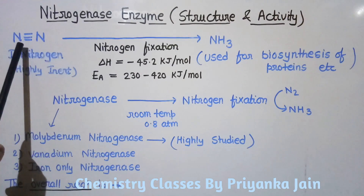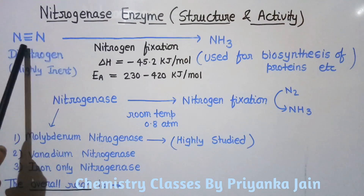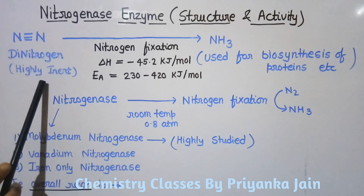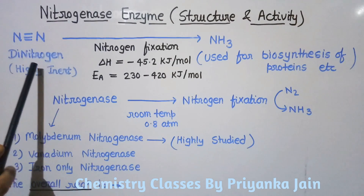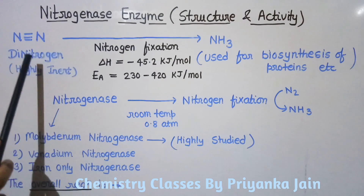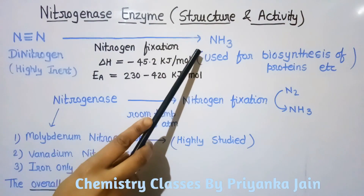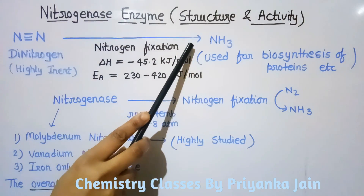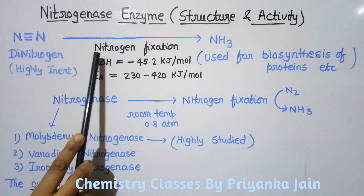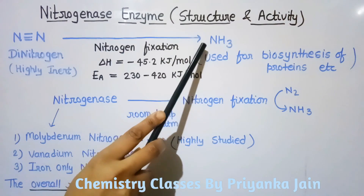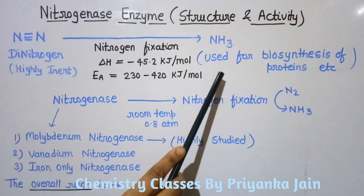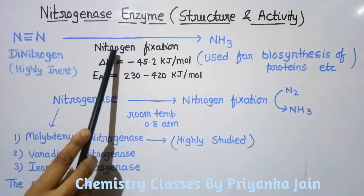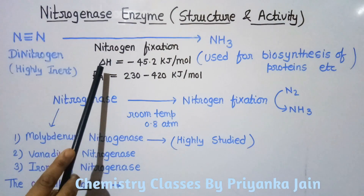What is the need for nitrogen fixation? The atmospheric nitrogen is present in the form of dinitrogen (N2), and in dinitrogen there is a triple bond, so it is highly inert and cannot be used by organisms as it is. It cannot be used in biosynthesis, so it must be transformed to ammonia. The conversion of dinitrogen to ammonia is known as nitrogen fixation, and this ammonia can be utilized by plants and other organisms for the biosynthesis of proteins, amino acids, etc.